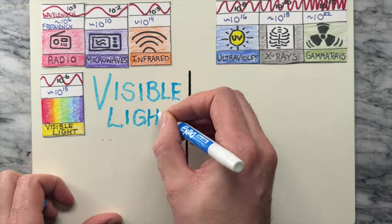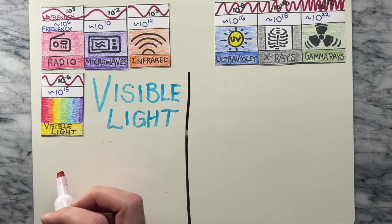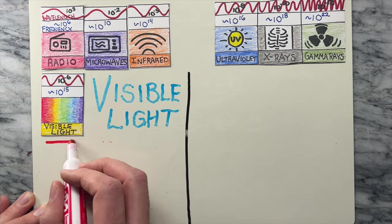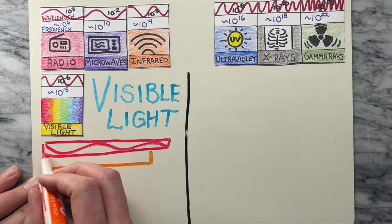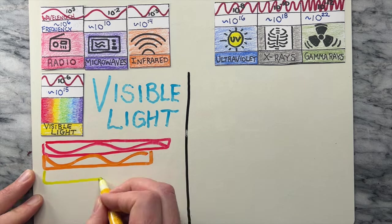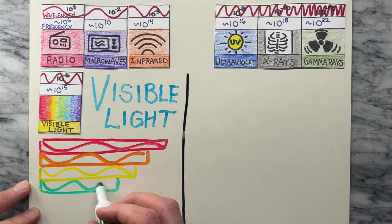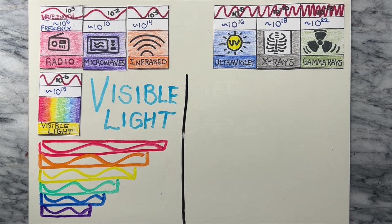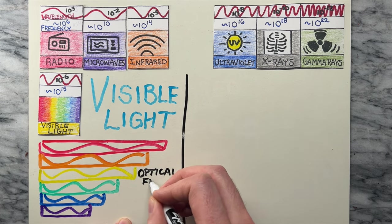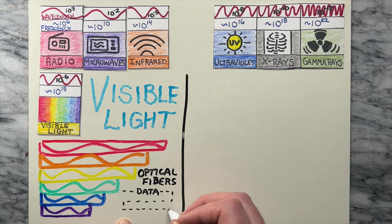Next in the spectrum is one everyone is very familiar with — visible light. From reds to blues, each color represents a unique wavelength, which helps us to perceive billions of colors. There are also use cases such as optical fibers, which transmit data using visible light, which is really amazing technology.